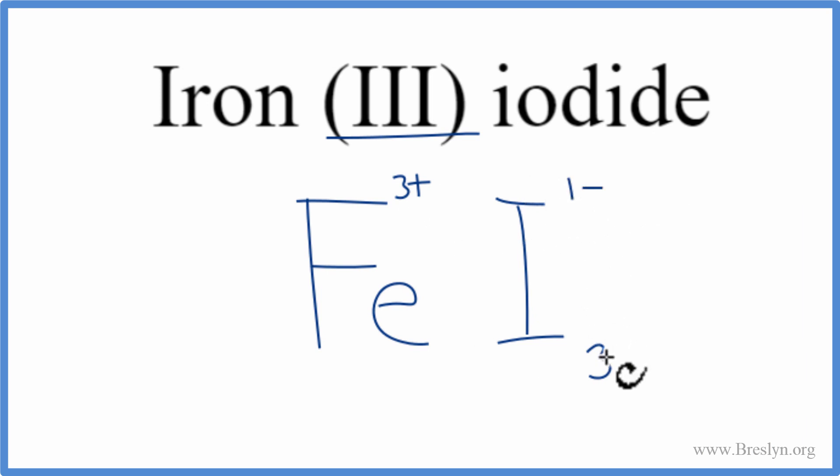So I have 3 of these. 3 times 1, that's 3 minus. 1 iron, that's 3 plus. So 3 plus 3 minus, that adds up to 0.